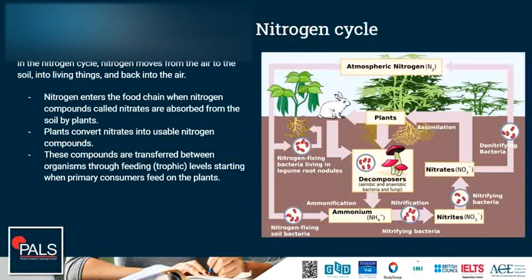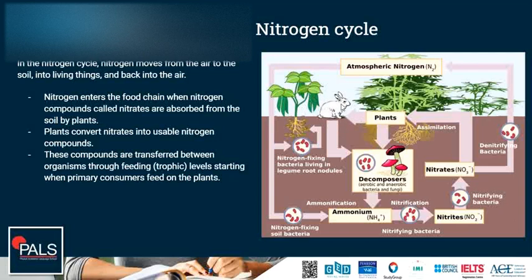In the nitrogen cycle, nitrogen moves from the air into the soil, into living things, and back into the air. Nitrogen enters the food chain when nitrogen compounds — mainly nitrates — are absorbed from the soil by plants. Plants convert nitrates into usable nitrogen compounds, specifically amino acids. These compounds are transferred between organisms through feeding levels, starting when primary consumers feed on the plants, and other consumers feed on the primary consumers.